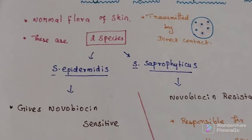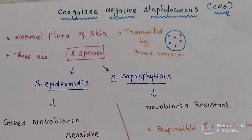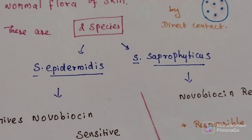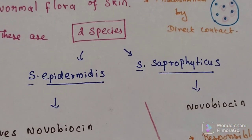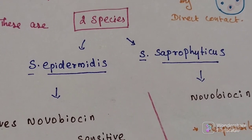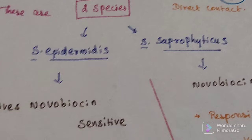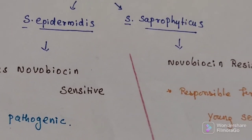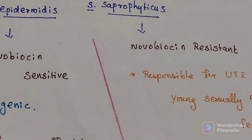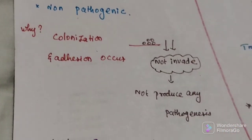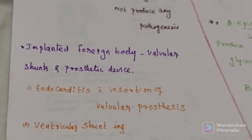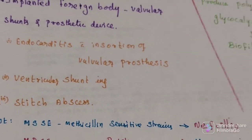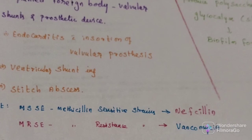In summary, coagulase-negative staphylococcus is the normal flora of the skin, transmitted by direct contact. There are two species: Staphylococcus epidermidis and Staphylococcus saprophyticus. Epidermidis is non-pathogenic, while saprophyticus causes urinary tract infections. Epidermidis is involved in biofilm formation, causing various types of infections.